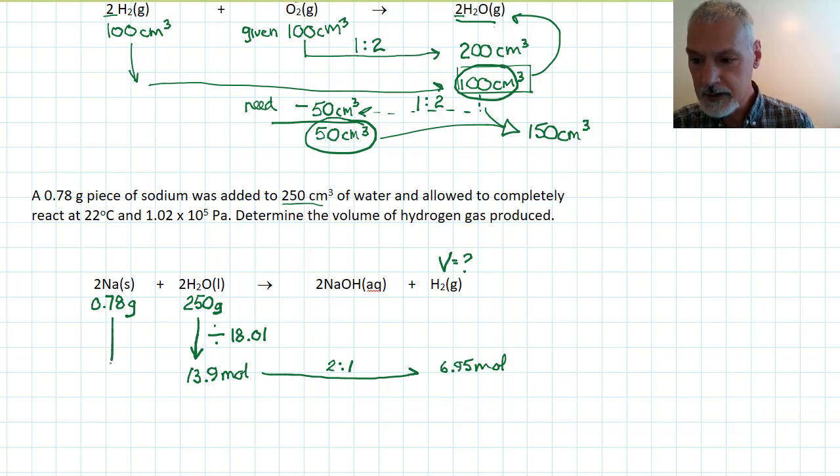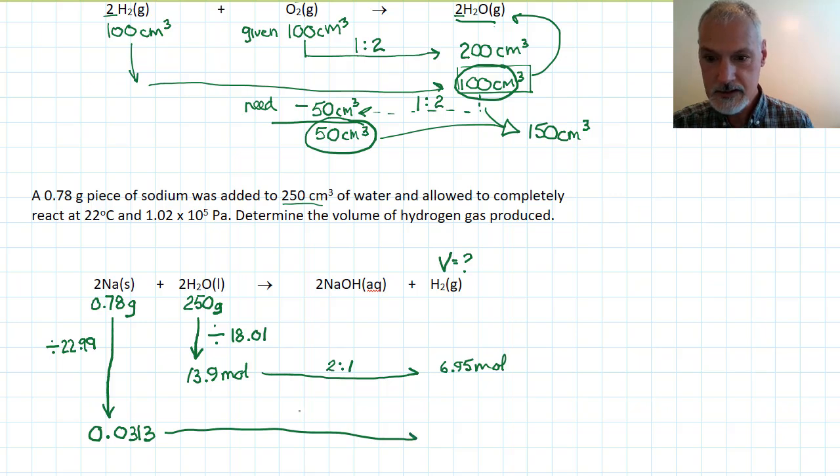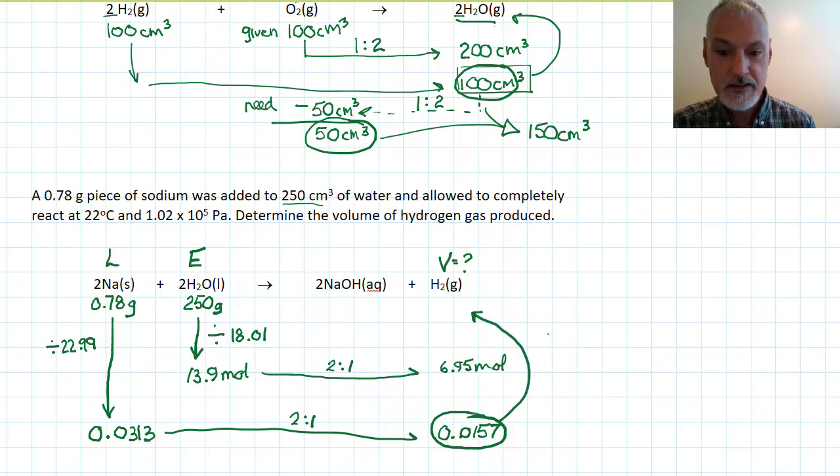If I consider the sodium as the limiting reagent, I'm going to take that and I'm going to divide that by the molar mass of sodium, 22.99. And I arrive at 0.0313 moles. My ratio is also 2 to 1. So 0.0157. Well, this is my smaller amount. So this is my limiting reagent. This is my excess reagent. It is the limiting reagent that's going to then determine what volume of hydrogen am I going to obtain?